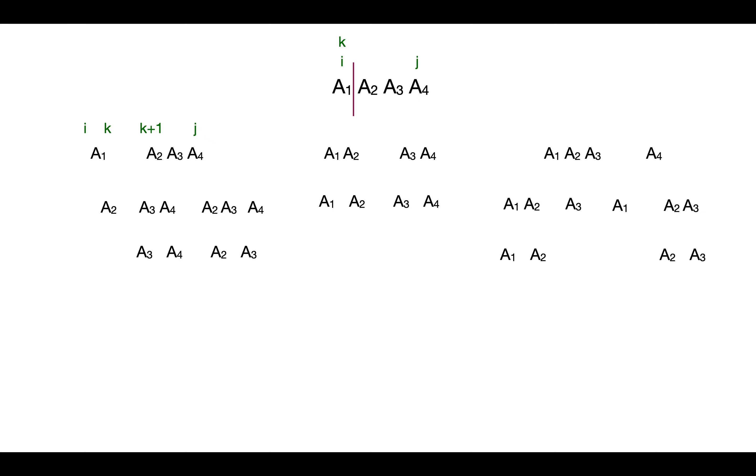Let's check complexity for matrix chain multiplication for all three approaches. In recursion, we are dividing the given sequence into two parts, from i to k and k plus one to j, and recursively finding the number of operations.